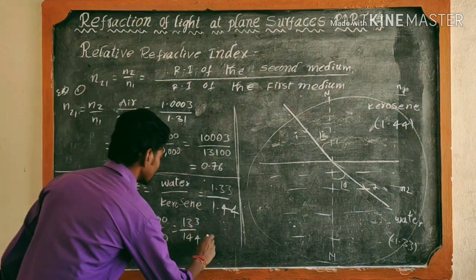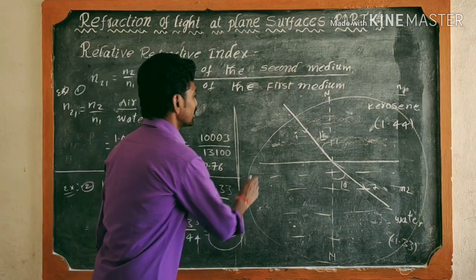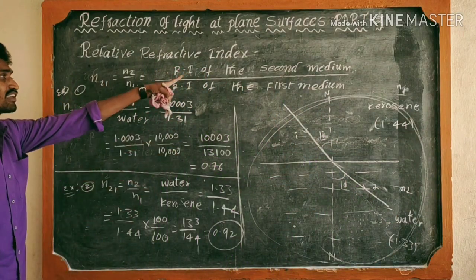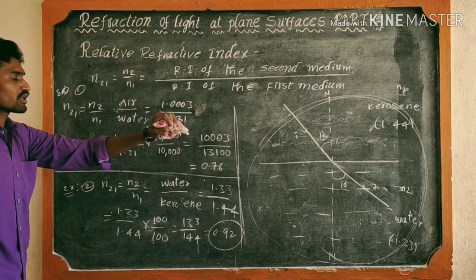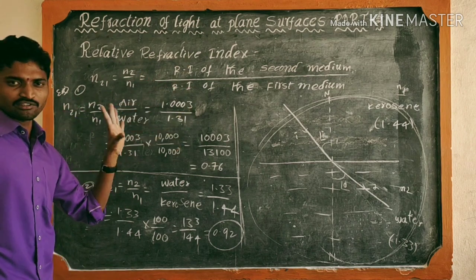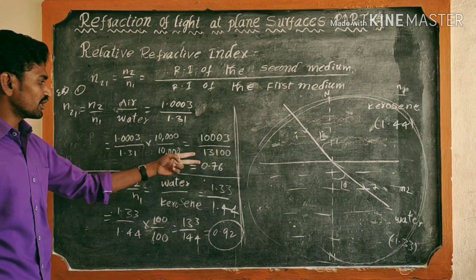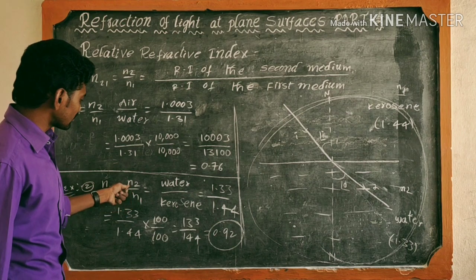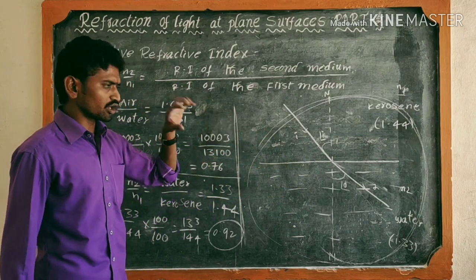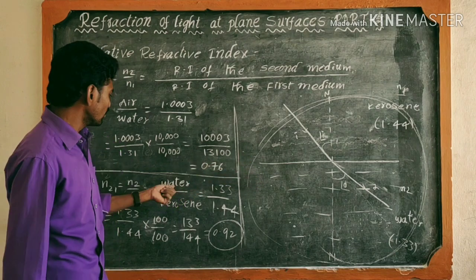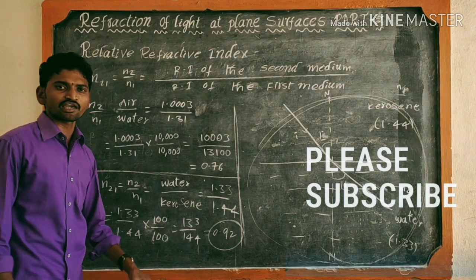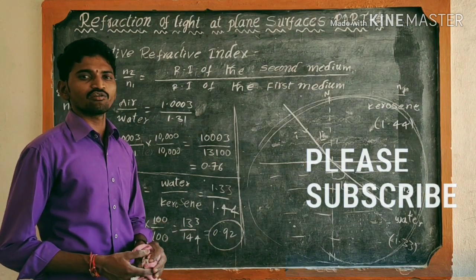So 133/144 is the relative refractive index of kerosene and water. This is the relative refractive index of two mediums — you use n₂ (second medium) over n₁ (first medium). This example is from the state textbook. Okay, thank you very much. Please subscribe to my channel and share this video. Thank you very much, welcome.